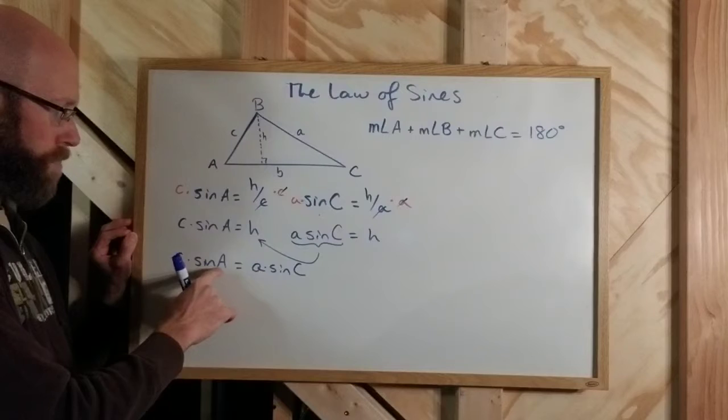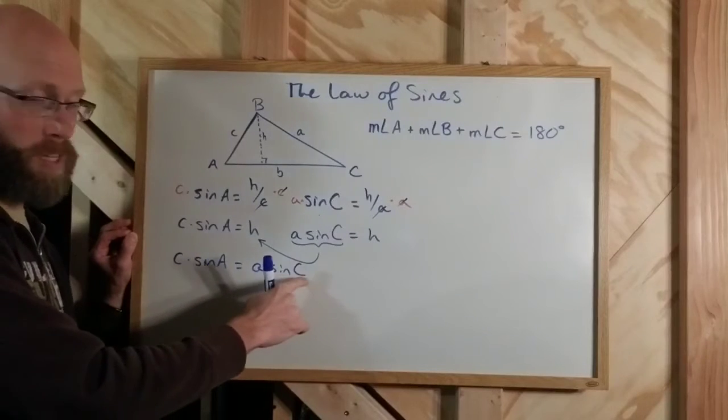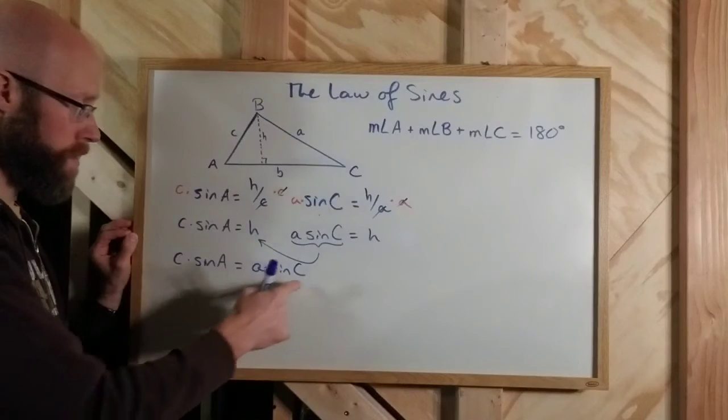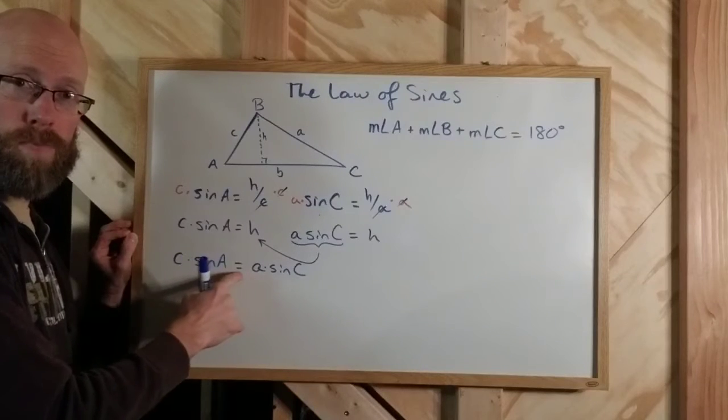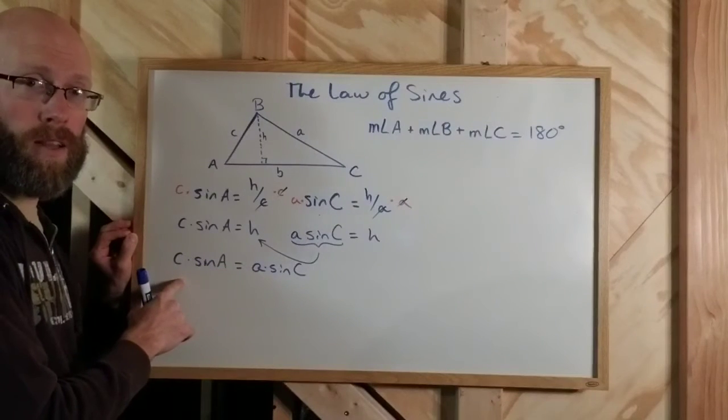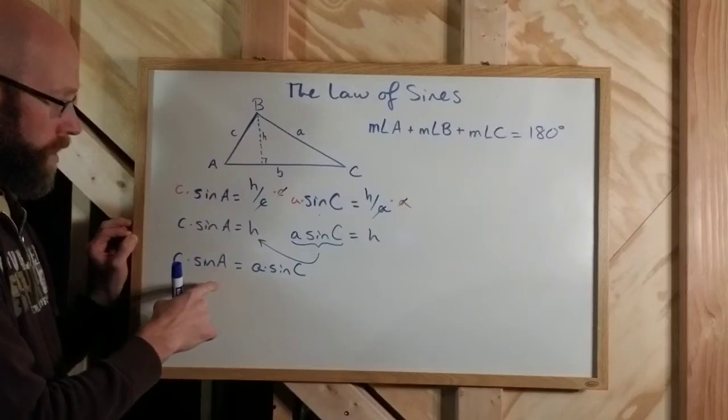That's little c, the sine of big A, little a, sine of big C. Okay? Again, the big letters, the capital letters, are the angles. The small letters are the side lengths.